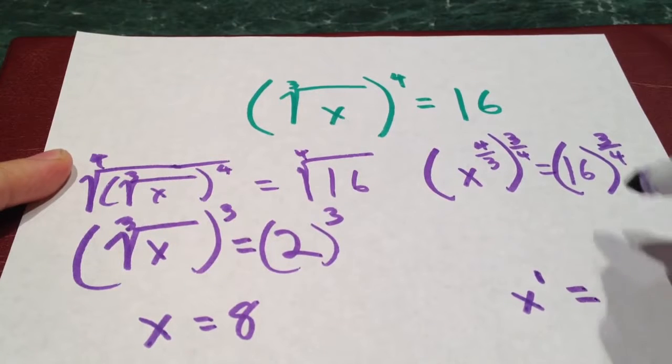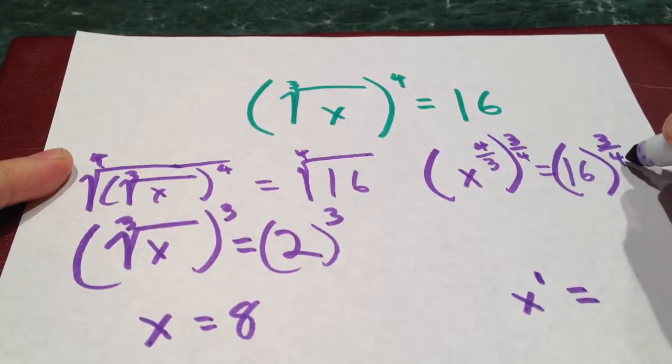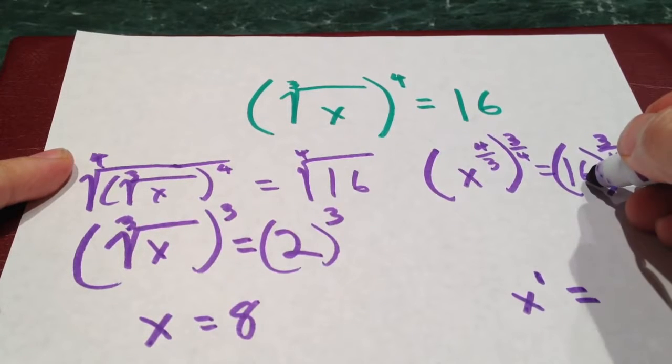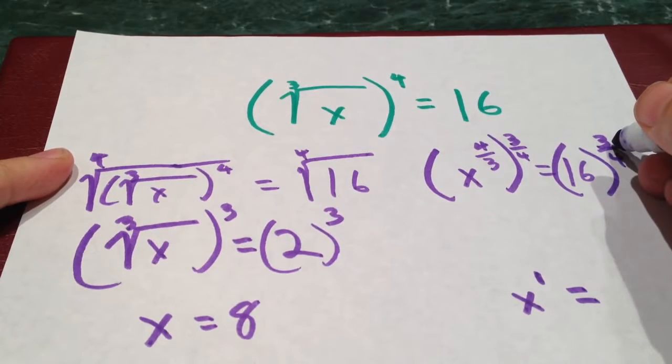So I get x to the 1. Sometimes I'll need to put this in the calculator, but if I'm clever, maybe I can do it without the calculator. If I realize the fourth root is 2 and 2 raised to the 3rd power is 8, I can get the right answer that way.